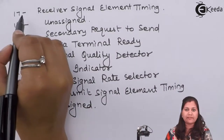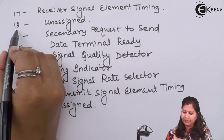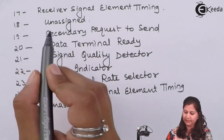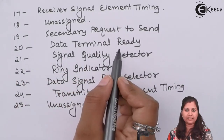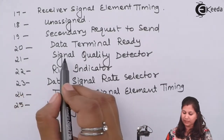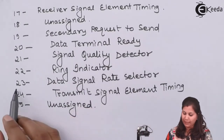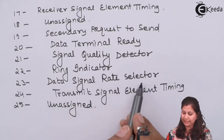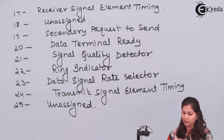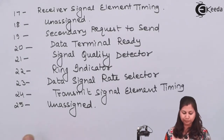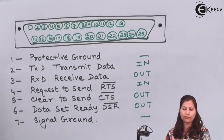Pin 17 is receiver signal element timing (receiver clock). Pin 18 is unassigned. Pin 19 is secondary request to send. Pin 20 is data terminal ready. Pin 21 is signal quality detector. Pin 22 is ring indicator. Pin 23 is data signal rate selector. Pin 24 is transmit signal element timing (transmitter clock). Pin 25 is unassigned. This completes the description of all 25 pins of the RS-232 cable.